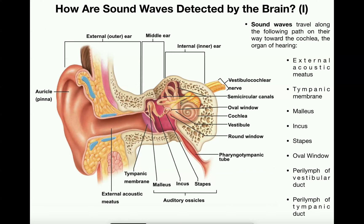I'm going to break this up into two separate videos, covering roughly the first half to a third of it in this video, with the second video directly after in the playlist. The general question we're going to be asking is: how are sound waves detected by the brain? In other words, how do you hear sound?